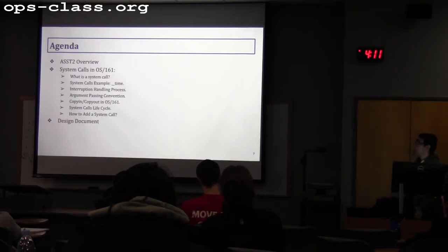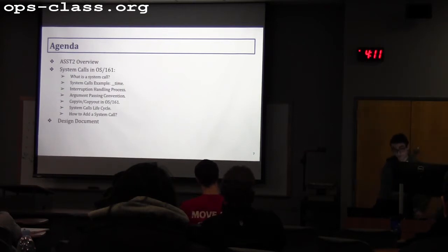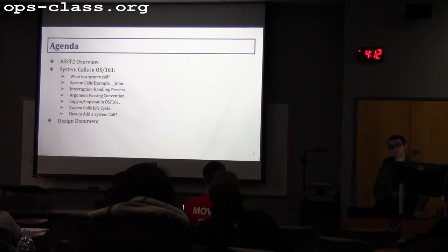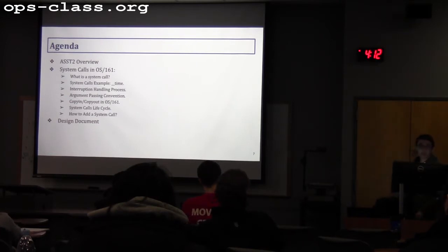I assume everybody is now done with assignment one, or at least the locks and CV parts. With those two primitives, you should be able to continue solving the upcoming assignments. Today, we will go over assignment two, and then we will start talking about system calls in OS 161 specifically.